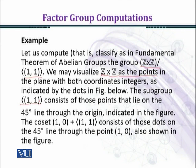The subgroup generated by (1,1) — the cyclic subgroup generated by (1,1) — consists of those points that lie on the forty-five degree line through the origin.